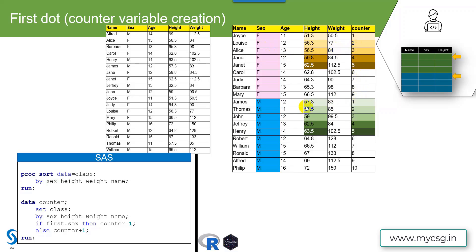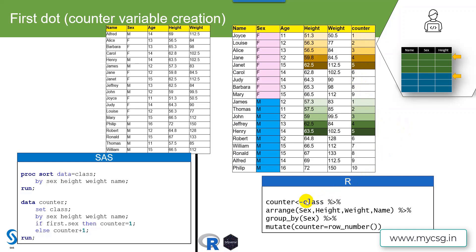Within males, when it sees the first male record, that condition becomes true so the counter gets reinitialized to 1, and then all subsequent records get incremented. In R, we make use of the pipe symbol (%>%) which takes the dataset specified before it and passes it on to the next function. Here we are creating a dataset named counter using class as input and then passing it to the arrange function.